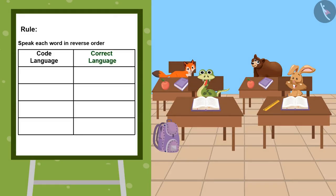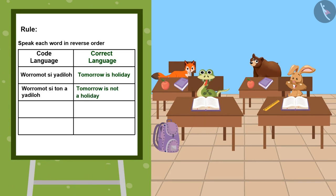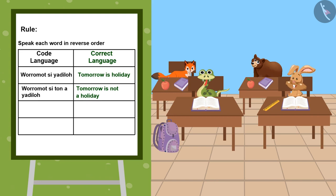Now tell me this — what are these two talking about? They are again using code language, but this is different from the first one. Bholu, there is no fixed rule for making patterns. You can use any rule to make new patterns and code. What is the rule for this code? We are speaking each word in reverse order. Kids, you can pause the video and use this rule to speak or write something.